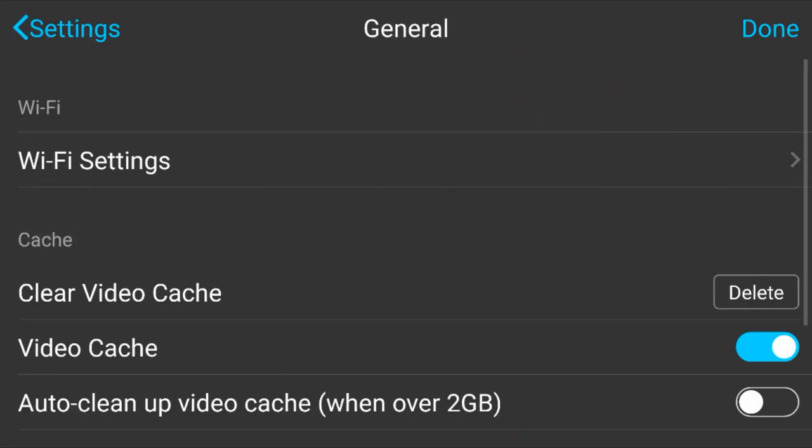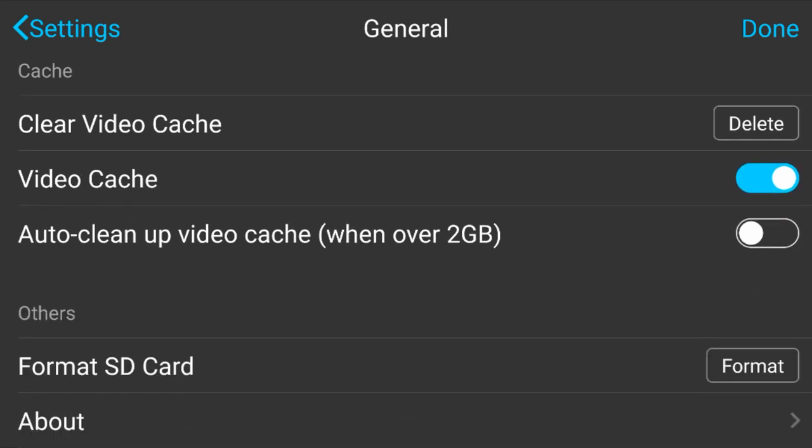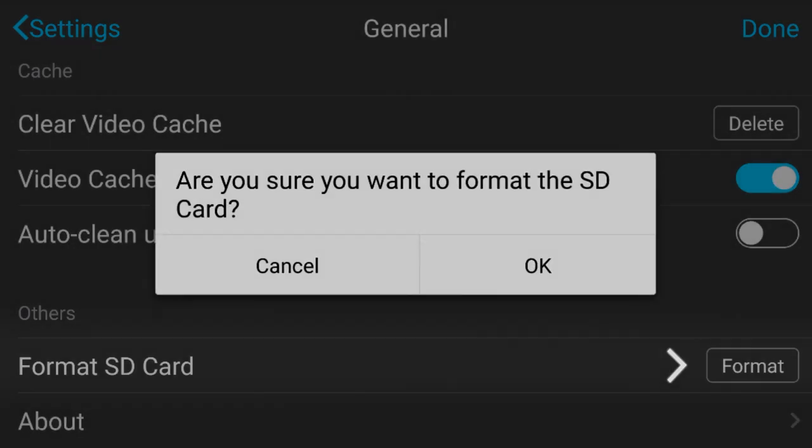The last menu is under the gear icon and then general. Here we can adjust the wifi settings and the video cache. The cache is referring to proxy recordings that are done onto your mobile device. These are low quality reference files so that you can quickly view shots on your phone. But they shouldn't be used in place of the actual recording. Also, note that the proxy recordings are subject to the wifi signal and can often have interference and more noise than the internal recording. You can clear the cache by hitting delete and set it up to auto clean up by hitting the switch at the bottom. Scroll down and you'll see the format SD card button. Hit format to wipe the micro SD.